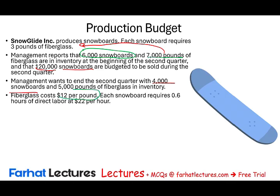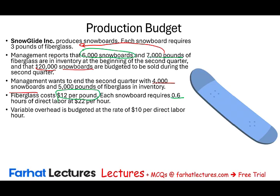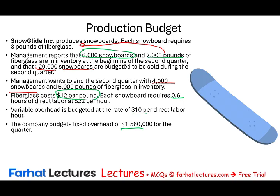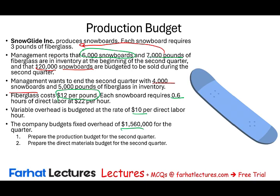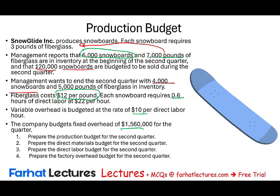Fiberglass costs $12 per pound. Each snowboard requires 0.6 of an hour of direct labor and it costs $22. Note that 0.6 hours is 36 minutes, slightly more than half an hour. Variable overhead is budgeted at a rate of $10 per direct labor hour. The company budgets fixed overhead at $1,560,000 for the whole quarter. Now we need to answer four questions: prepare the production budget, the direct material budget, the direct labor budget, and the factory overhead budget for the second quarter.